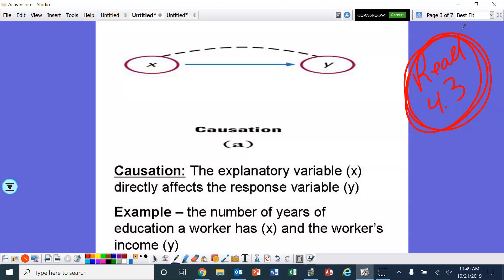All right, causation. Okay, cause and effect. We have our explanatory variable x and our response variable y. So the explanatory variable directly affects the response variable y. Example, the number of years of education a worker has, which is x, and the worker's income. There is a very positive linear association with the amount of education and the amount of income.